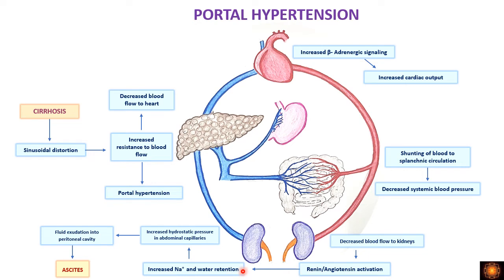Decreased flow to the kidney activates the renin-angiotensin system as a reflex mechanism, causing more retention of sodium and water. This increases hydrostatic pressure in the abdominal vessels, causing fluid to exude into the peritoneal cavity, leading to ascites. This creates a vicious cycle: portal hypertension causes varices, and the kidney effect causes more water and sodium retention, further increasing pressure and ascites.